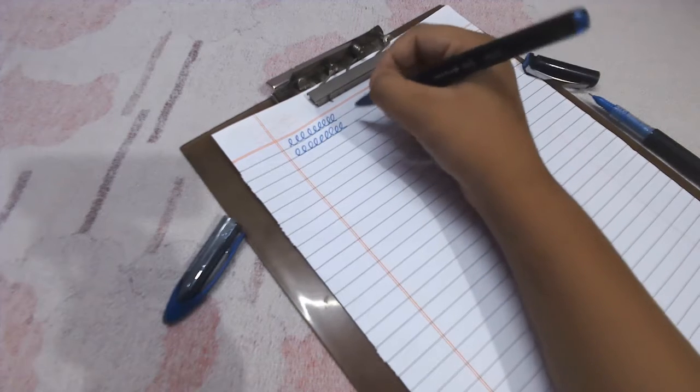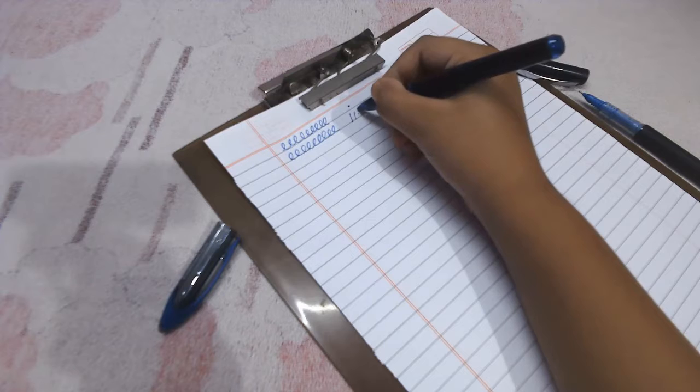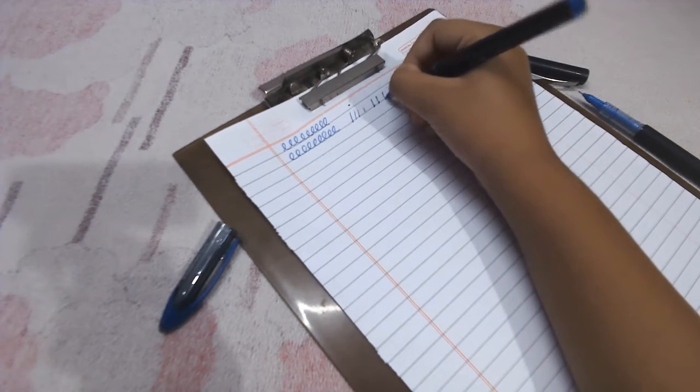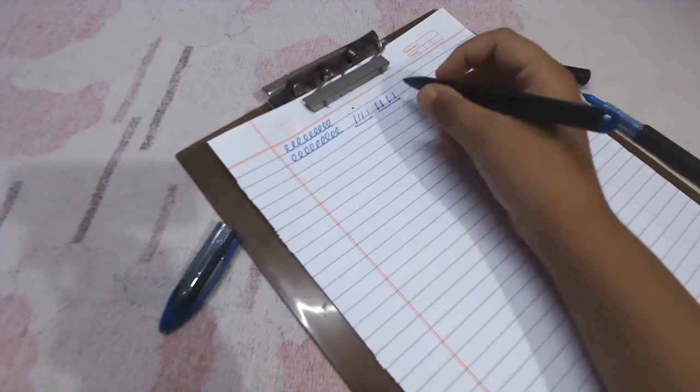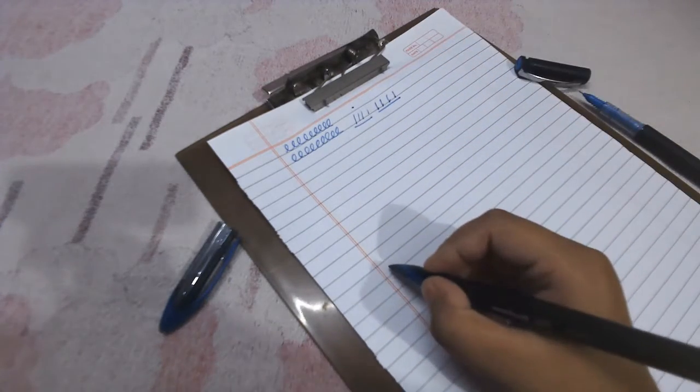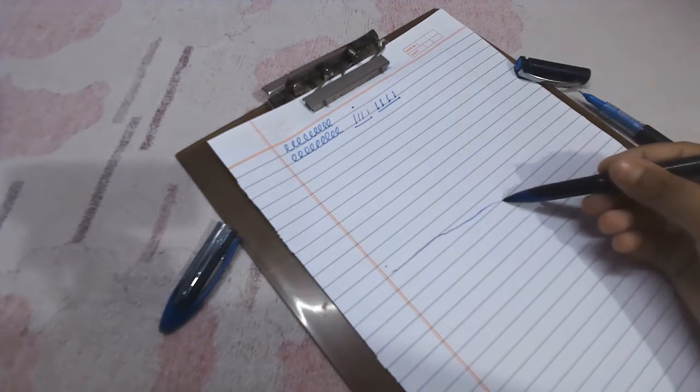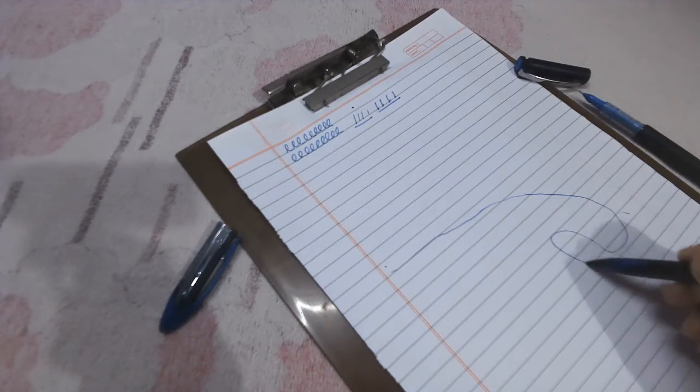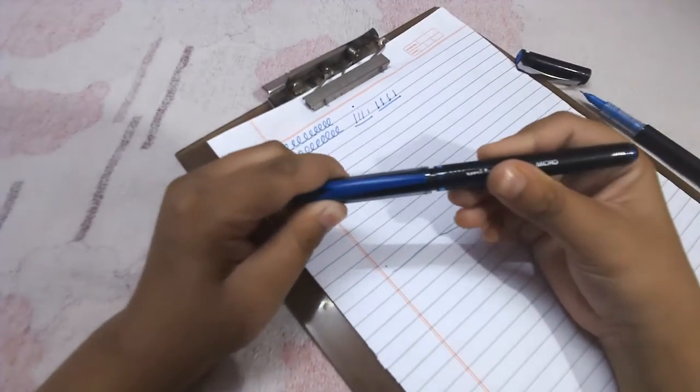Plus, one more good thing about this pen is it has variable line widths. Look at this - this is a really thin line, and now I can go bold like that. It's a very visible difference between these two pens. Plus, you can write at any angle. Look at this - this is a normal angle and I'm going like this and it still writes at this angle.